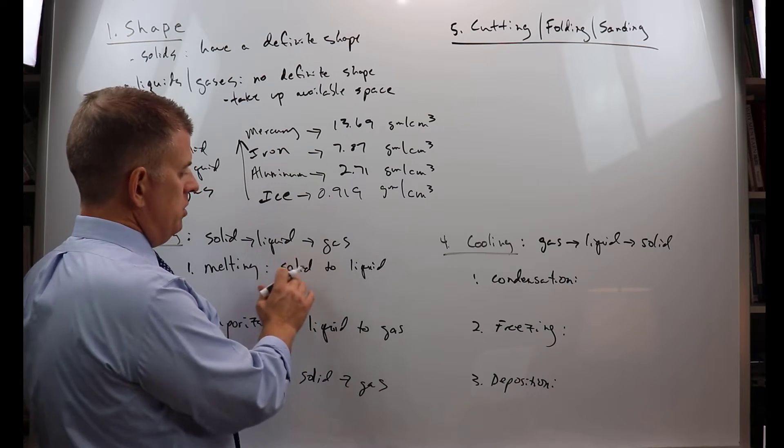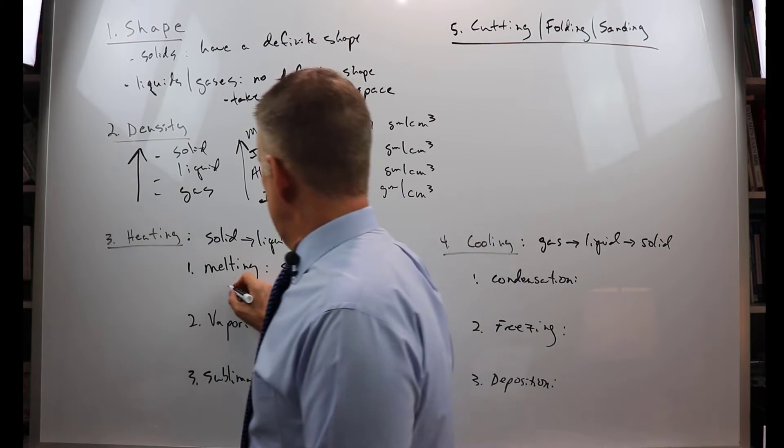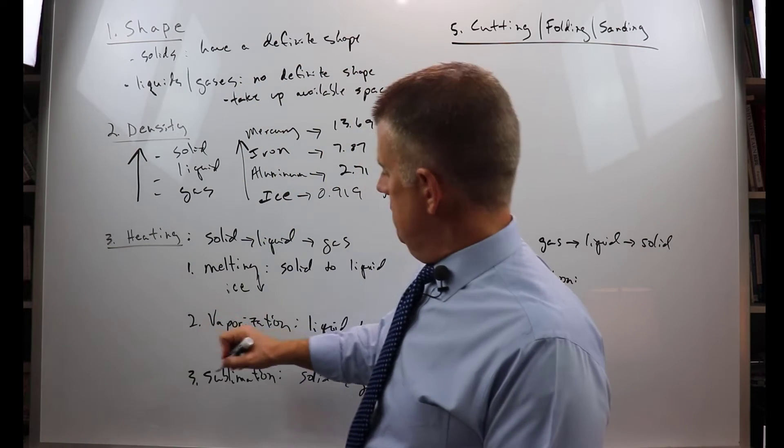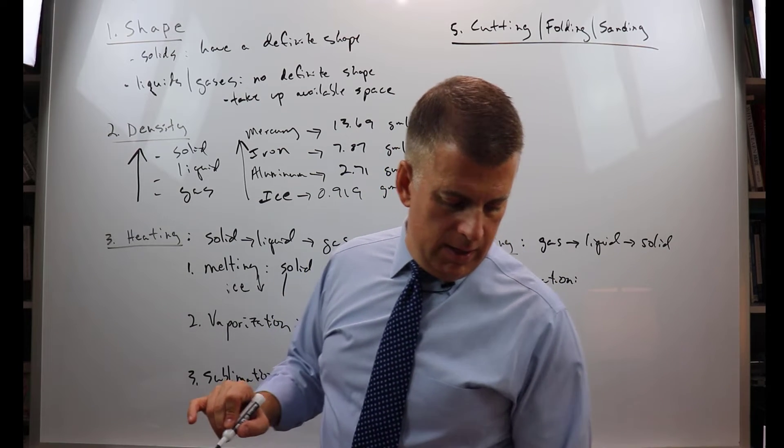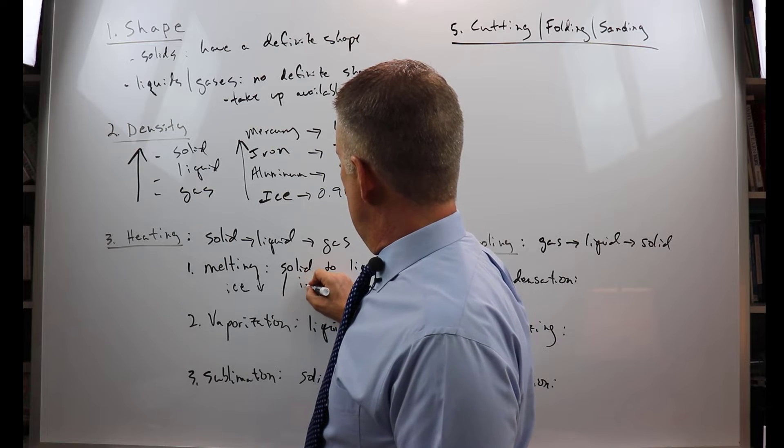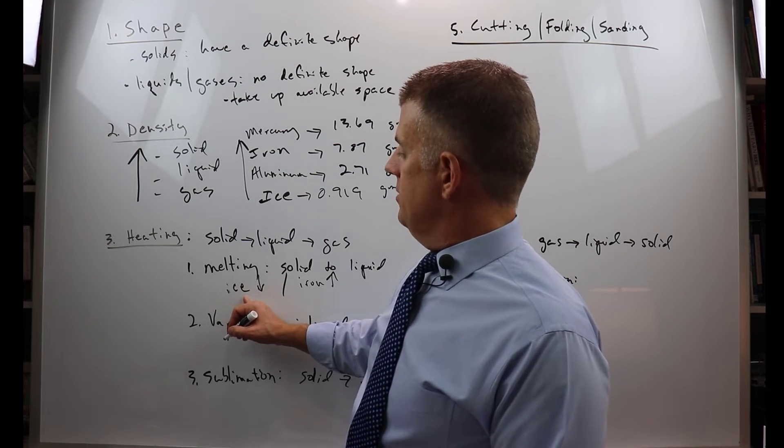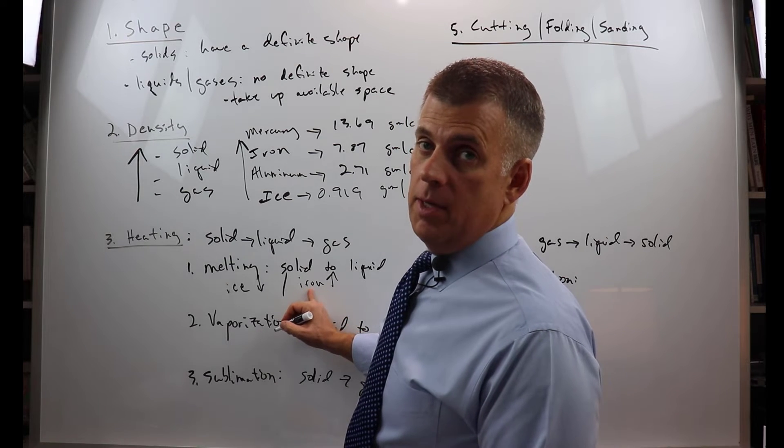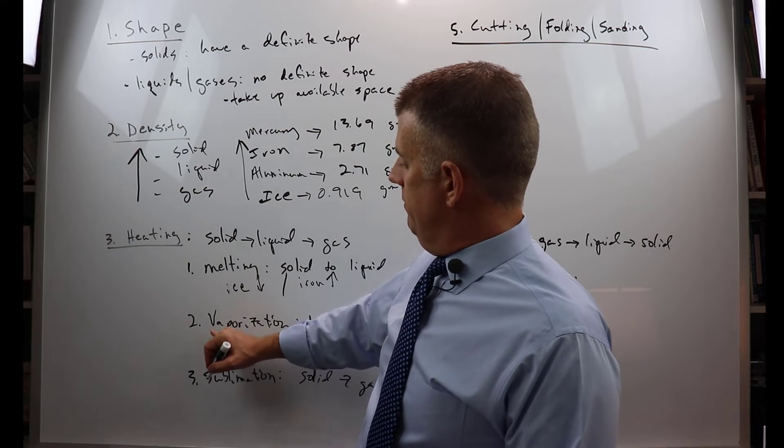Now in melting, the temperatures at which substances melt are going to change, of course. For ice, I'll put ice here - it's a pretty low temperature. For something like iron, it's going to be a pretty high temperature. But the process is the same. Ice melts even though it melts at a pretty low temperature, and iron melts but it melts at a high temperature.